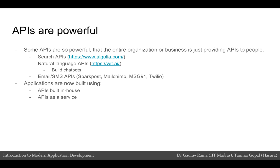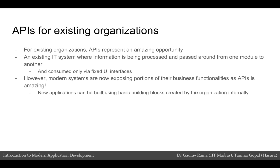Examples include SparkPost, MailChimp, MSG91, and Twilio. So, applications that are built nowadays not only use in-house APIs that are built, but also use APIs that are provided by other businesses and organizations as a service.